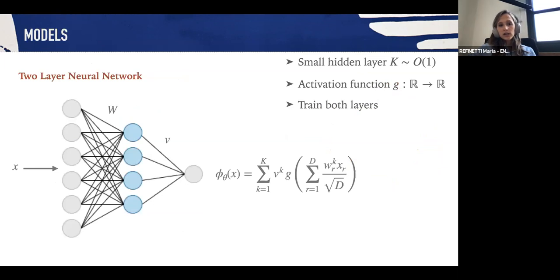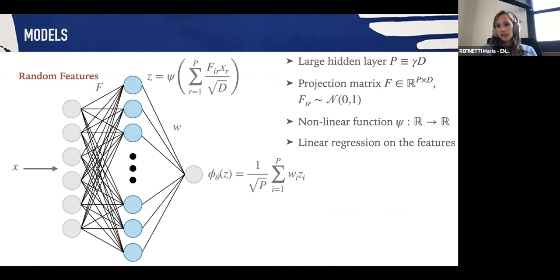The networks we're going to deal with are, on the one hand, three-layer neural networks with a small hidden layer with order one hidden nodes, activation function sigma, and in which both layers are trained. We're going to compare these to the random feature model in which the input is first projected into p dimensions by a projection matrix F, which we take to be an iid matrix. We then apply a non-linear function to obtain the features upon which we just do linear regression. As you know, random features can also be seen as a two-layer neural network in which the first layer is kept fixed.